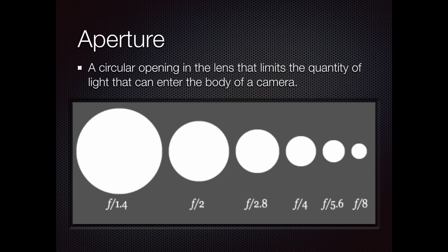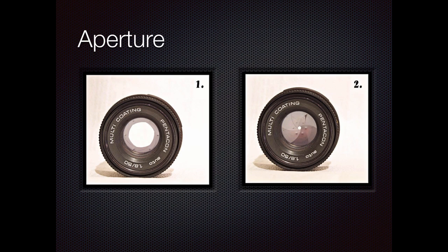Aperture is a circular opening in the lens that allows a certain quantity of light to enter the camera. Basically, if you take a lens like this, there's a tiny little speck of light in there. What aperture does is it changes how much light can come through — I can open it way up so a lot more light comes through, or I can let it close down. That's controlling how much light is coming into the camera, which plays a factor when we're taking pictures.